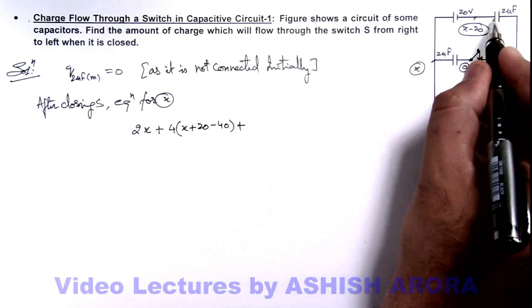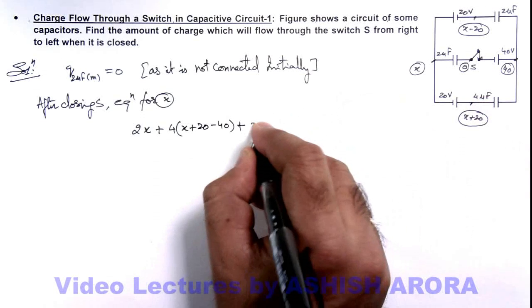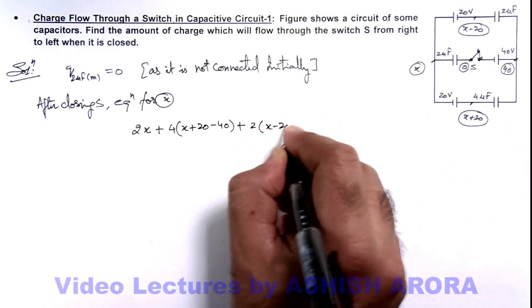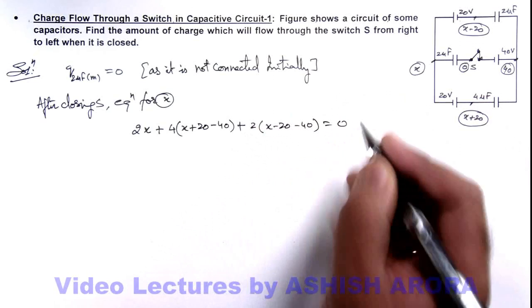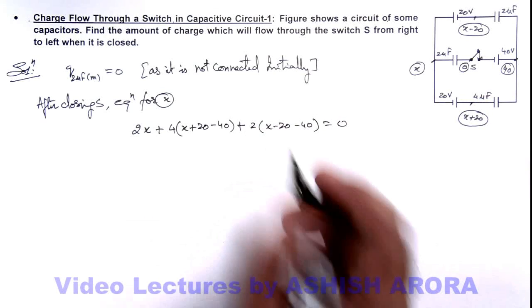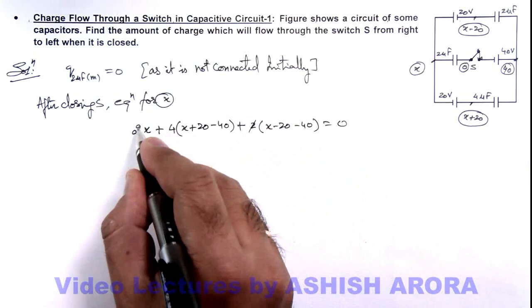Plus, charge on this plate of capacitor will be 2 multiplied by x minus 20 minus 40, this should be equal to zero. Here in this situation, this 2 gets cancelled out.